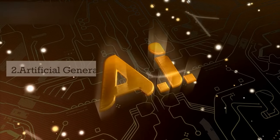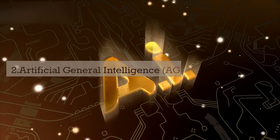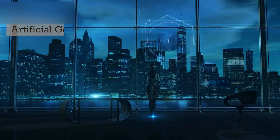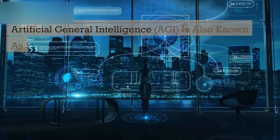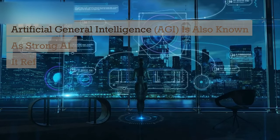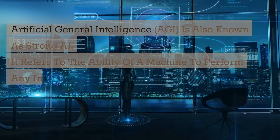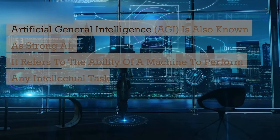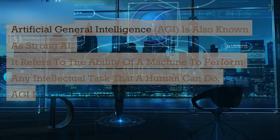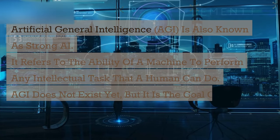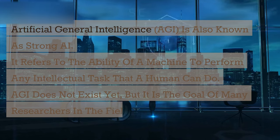The second type is Artificial General Intelligence, or AGI, also known as strong AI. It refers to the ability of a machine to perform any intellectual task that a human can do. AGI does not exist yet, but it is the goal of many researchers in the field of AI.